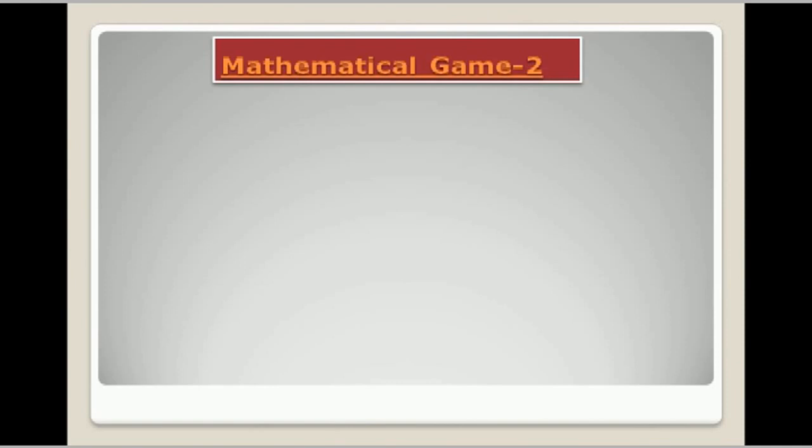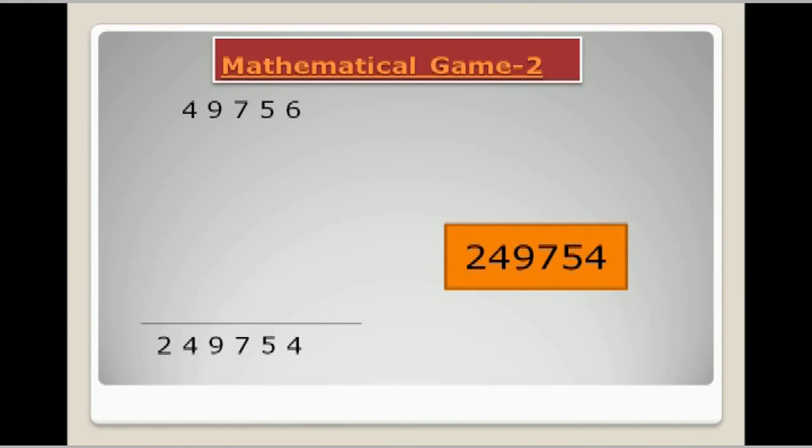Now let us play game number 2. Now in this we will add different numbers and I will write the answer first. For example, you write this number 49756 and I will write the answer. Now I am going to hide this number that is the answer.